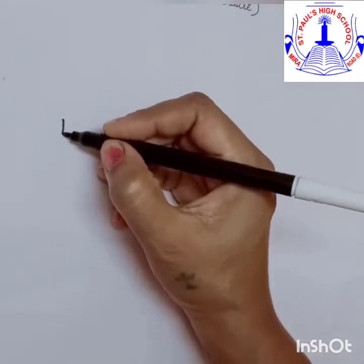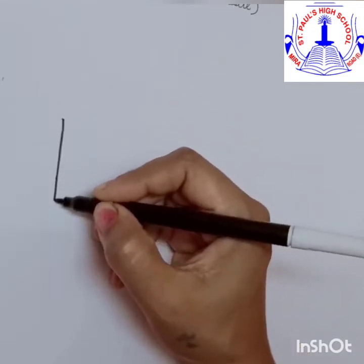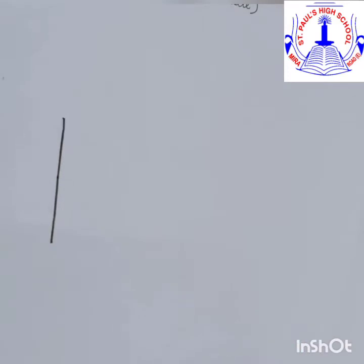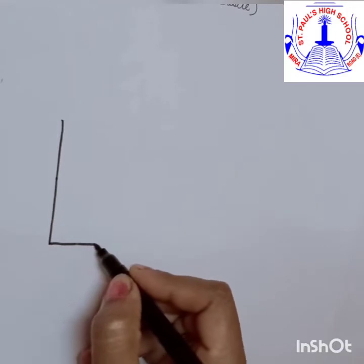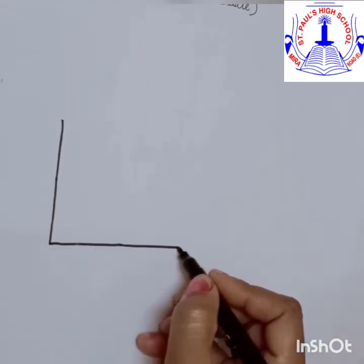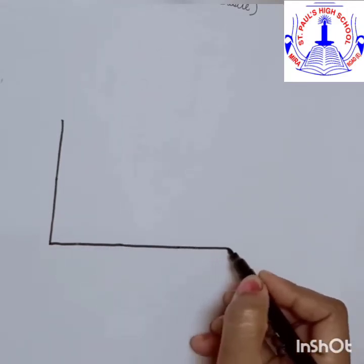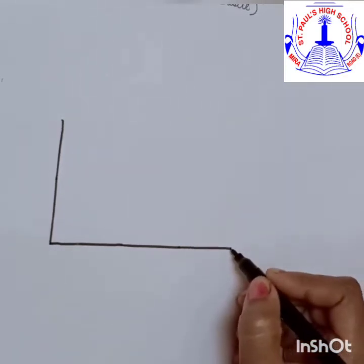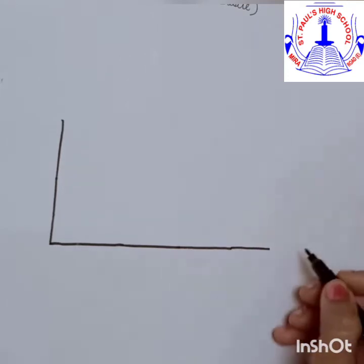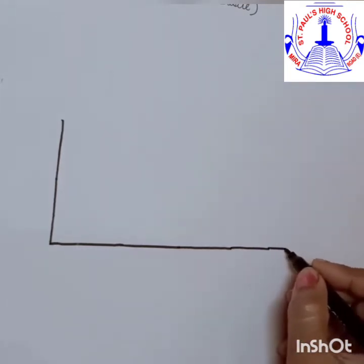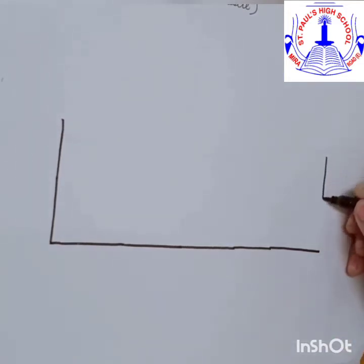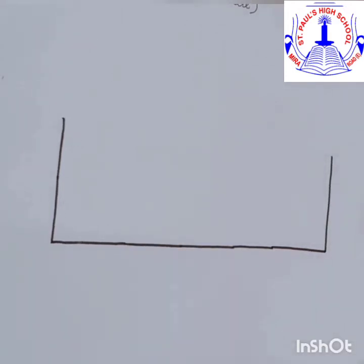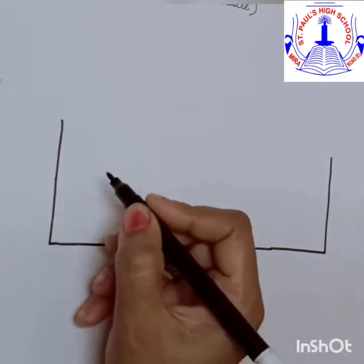As you can see, from the left side of your page, you need to draw one standing line. Then we are going to draw one long sleeping line. So children, can you see, we are getting the shape of a rectangle. Now, from the right side to the same level, we have to draw a standing line.